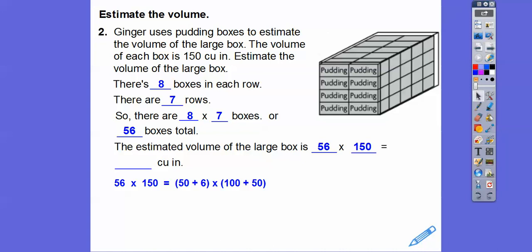So 8 times 7 is 56 boxes. If each box is 150, then I do 56 times 150. 56 is 50 plus 6, and 150 is 100 plus 50. So 50 times 100 is 5,000. 50 times 50, well 5 times 5 is 25, add those two zeros to get 2,500. Then the 6 goes times 100 is 600. 6 times 50, 6 times 5 is 30, add a zero, so 300.